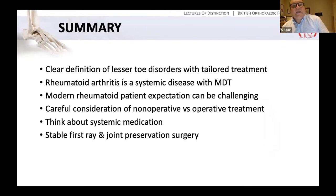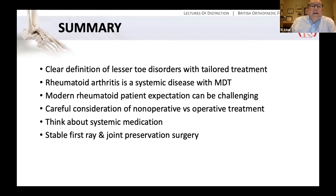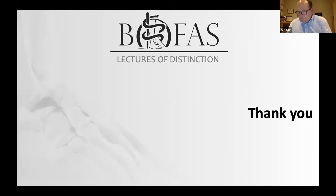In summary, hopefully you can take away tonight a clear definition of lesser toe deformities, how to describe them, and how to manage a tailored treatment program. Rheumatoid arthritis is a systemic disease involving a multidisciplinary team. The modern rheumatoid patient has expectations which can be challenging, reflecting that their deformities are not as severe and the foot allows them to perform to a much higher level than previously. Give careful consideration to non-operative versus operative treatment, think about systemic medication, and think about stabilising the first ray and joint preservation surgery.